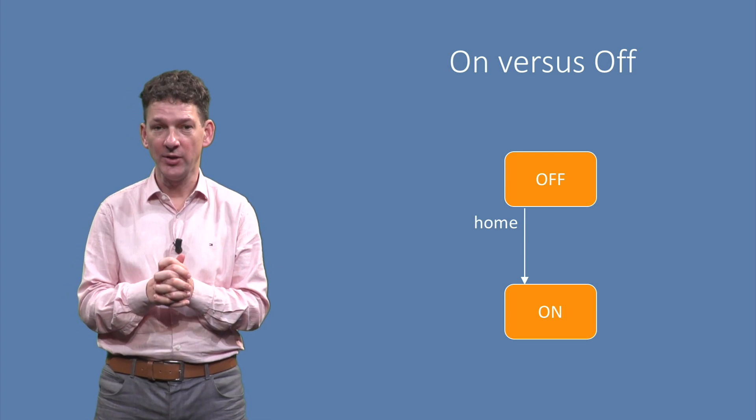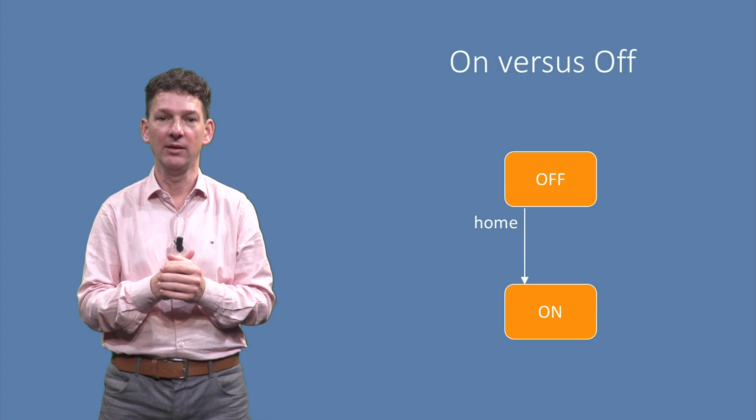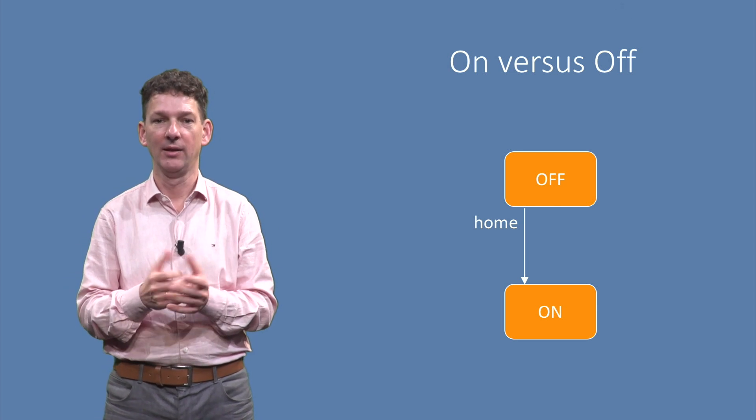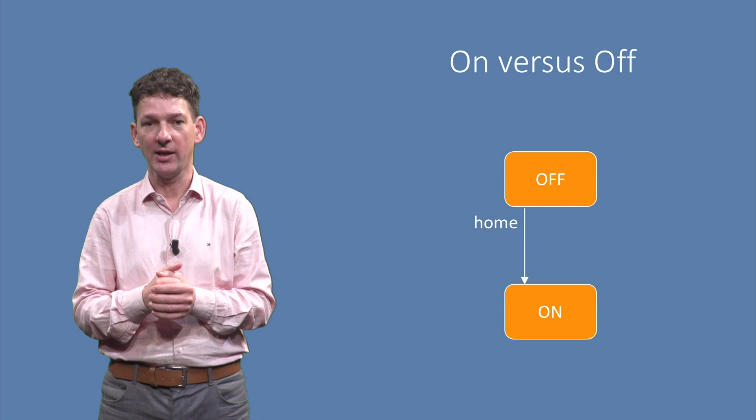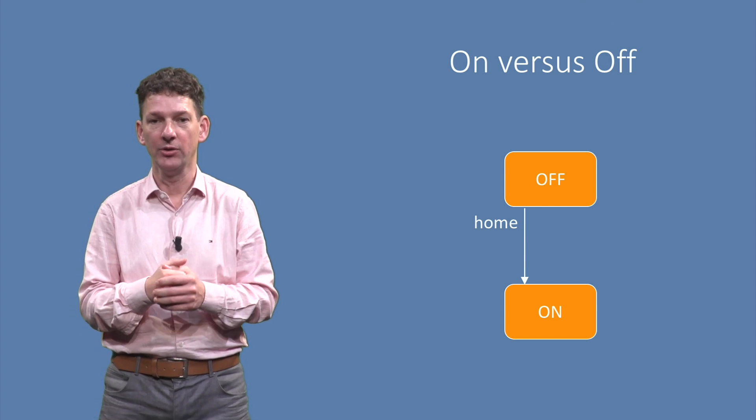This transition is triggered by an event, in this case pressing the home button. In the diagram this is represented as the home label on the transition.